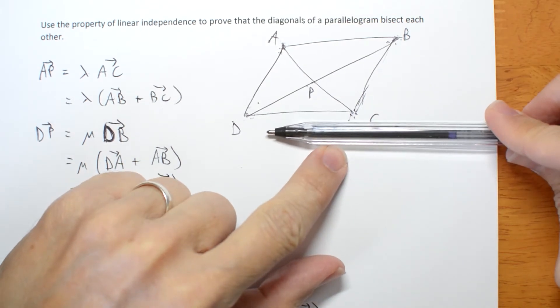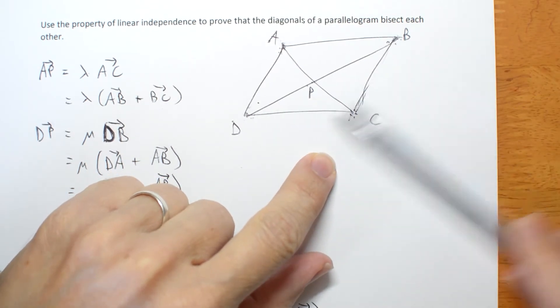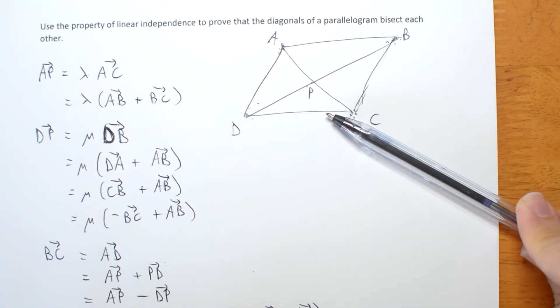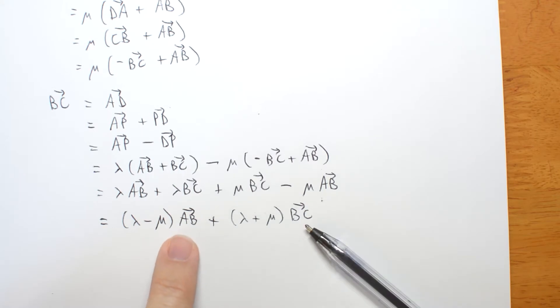It would be a single straight line. So assuming it's actually a parallelogram, not a trivial straight line thing, then AB and BC must be linearly independent.